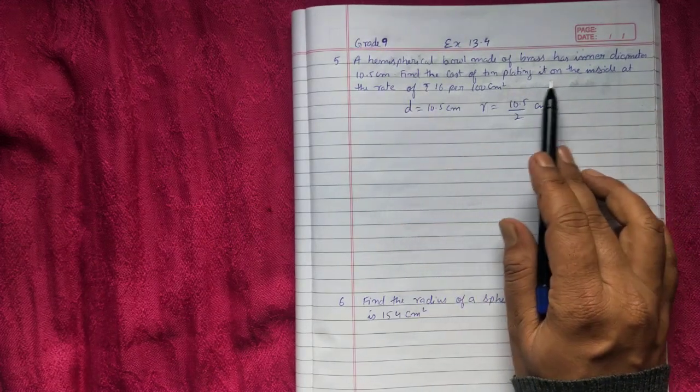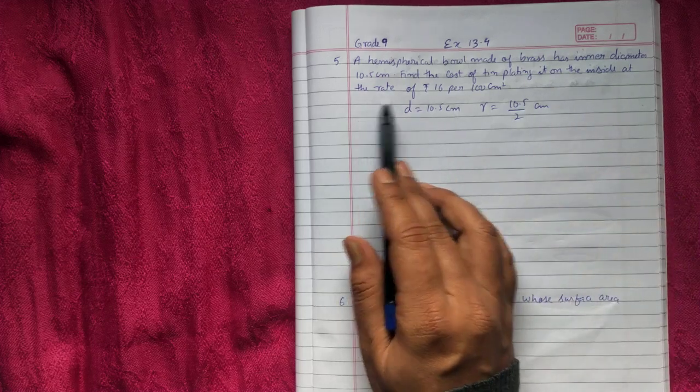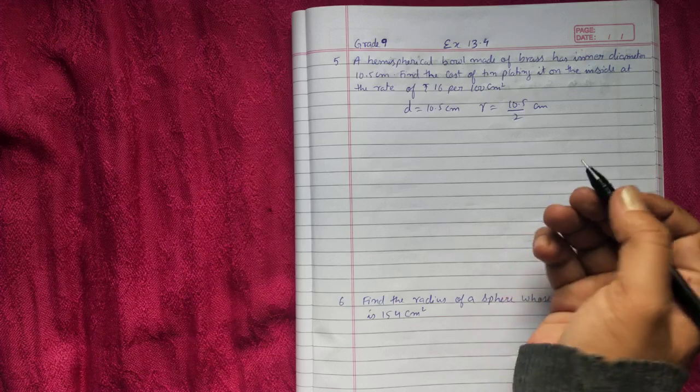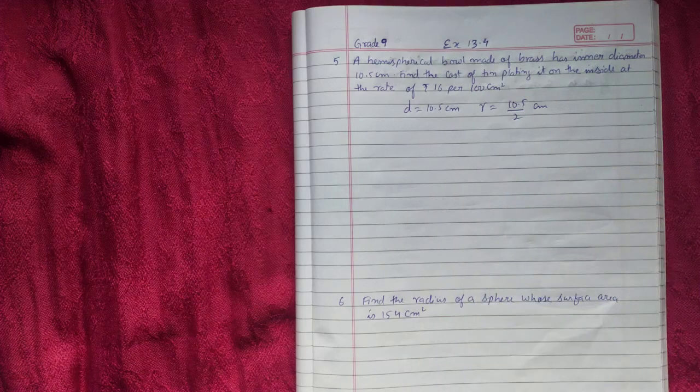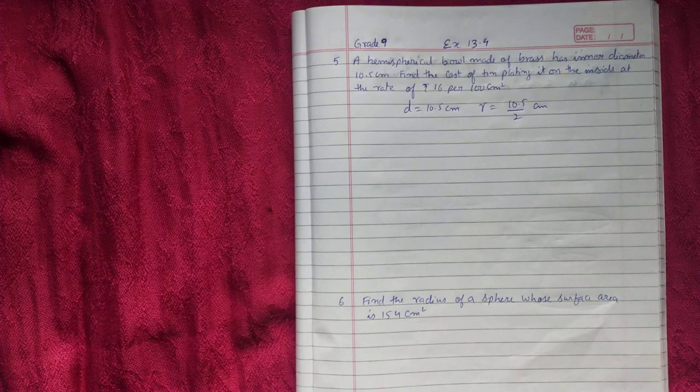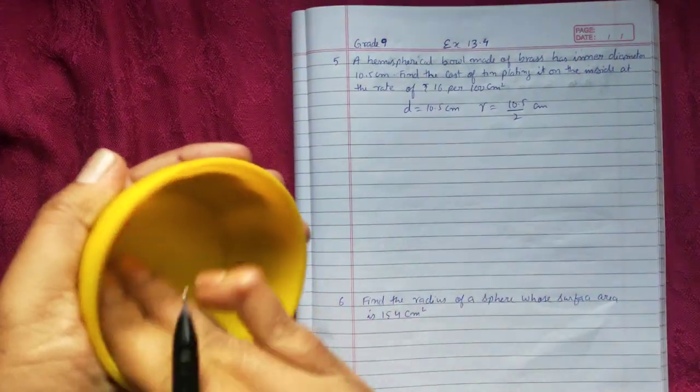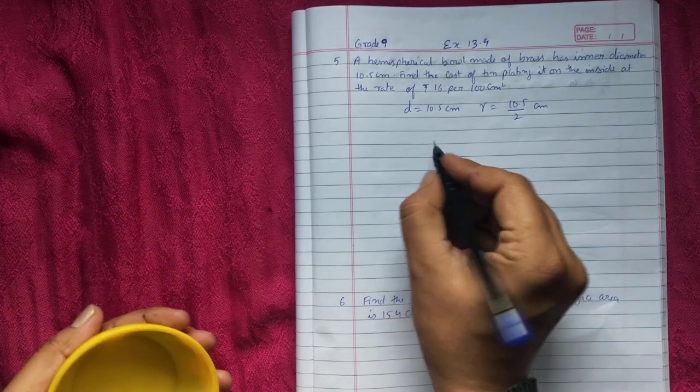Find the cost of thin plating it on the inside at the rate of rupees 16 per 100 cm square. So you are going to find the cost of thin plating. That means you are going to cover the inside, that means you are just going to find the CSA.